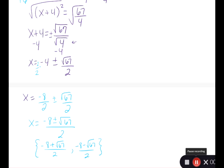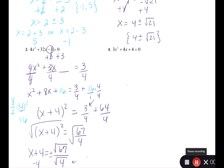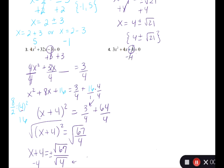Sometimes Math Lab can be particular about the form, so make sure you're paying attention. The computer might also want you to break this up and write it as (negative 8 plus square root of 67) divided by 2 and (negative 8 minus square root of 67) divided by 2. For number 4, following the same 5 steps, first isolate the constant: subtract 4 from both sides to get 3x squared plus 4x plus some number equals negative 4.